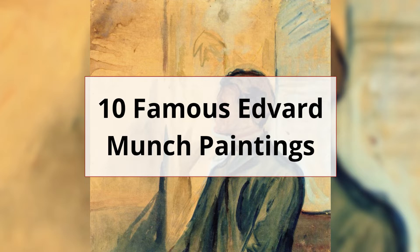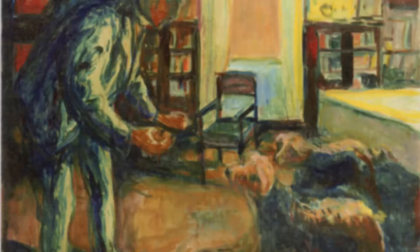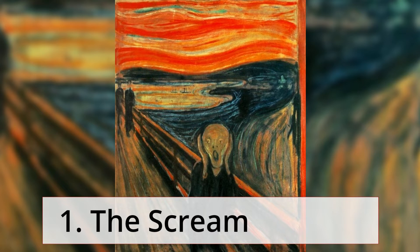10 Famous Edvard Munch Paintings. Edvard Munch, 1863–1944, was a Norwegian painter who had difficult teenage years. His childhood was overshadowed by illness, bereavement, and the dread of inheriting a mental condition that ran in the family. These are some of the most famous paintings by Edvard Munch.